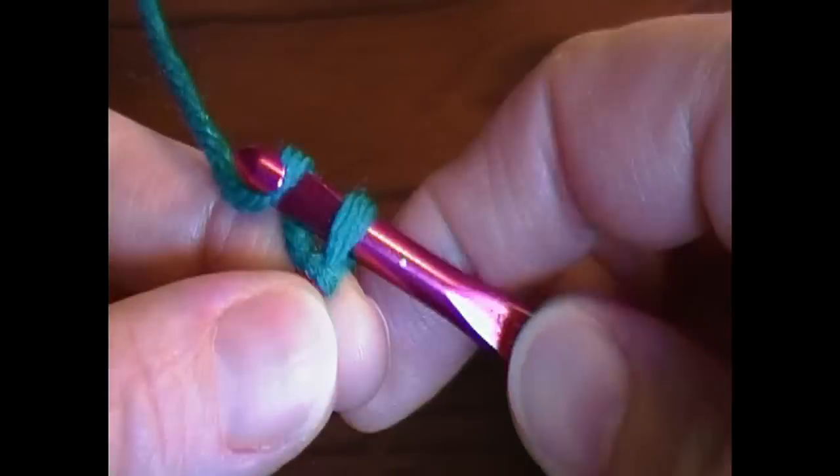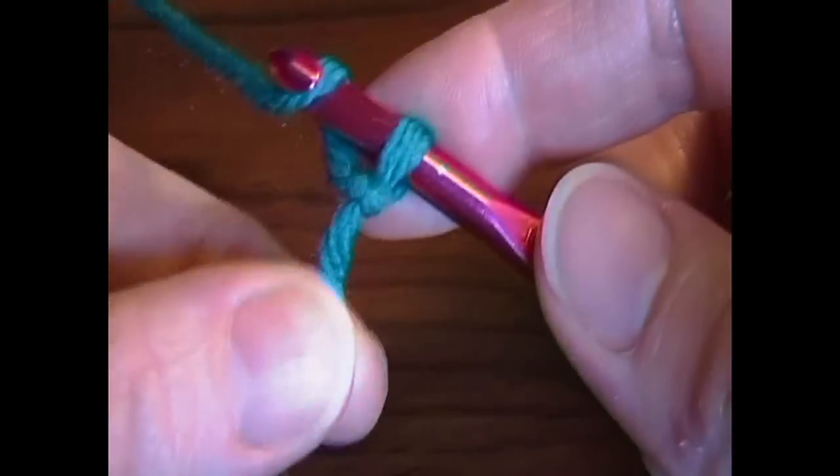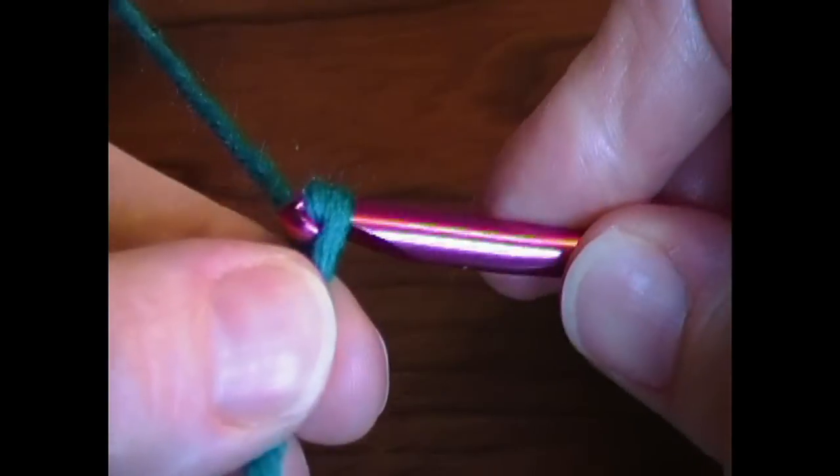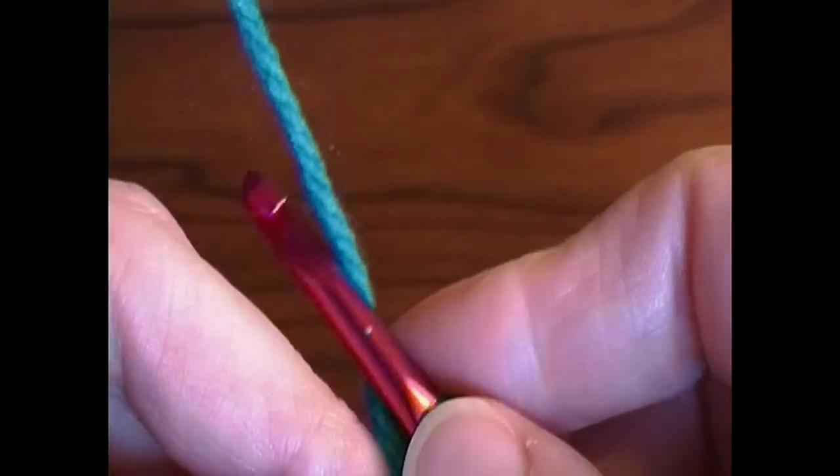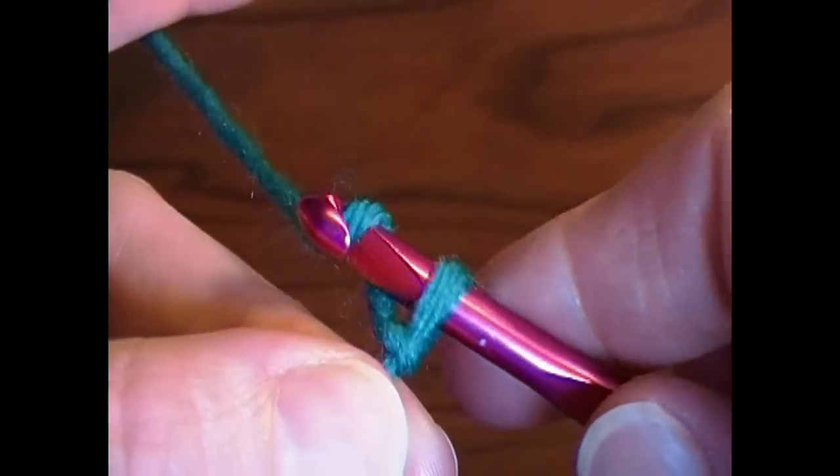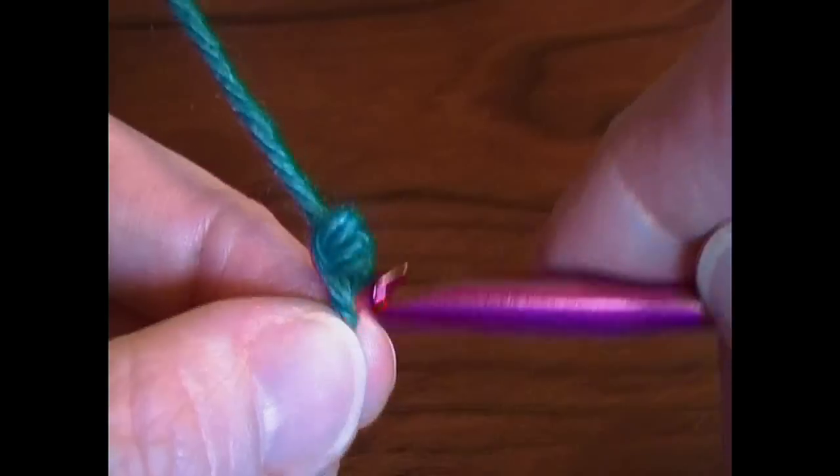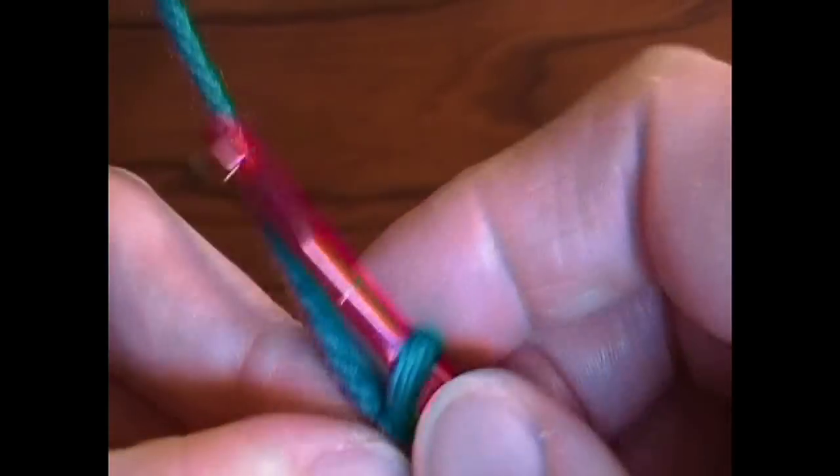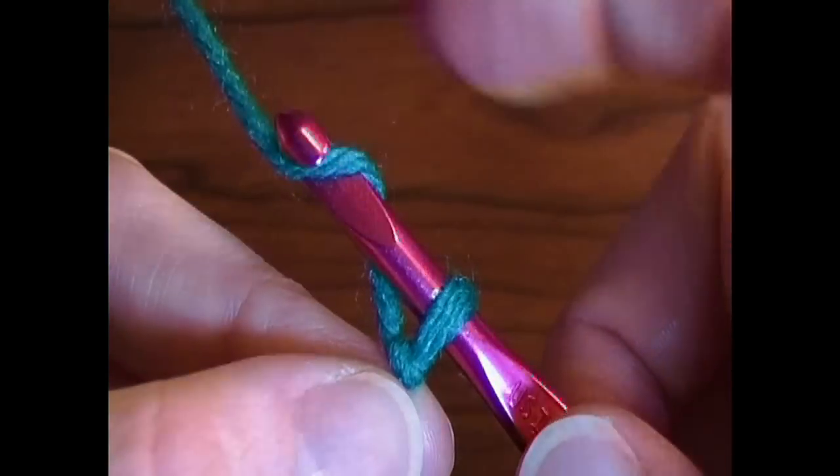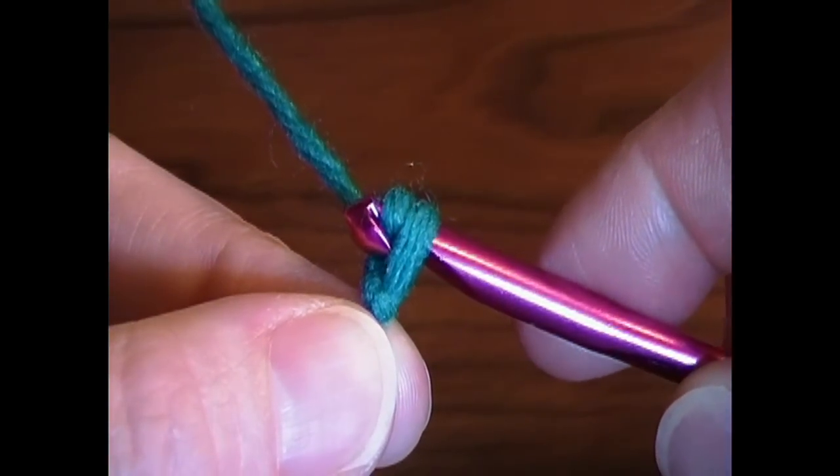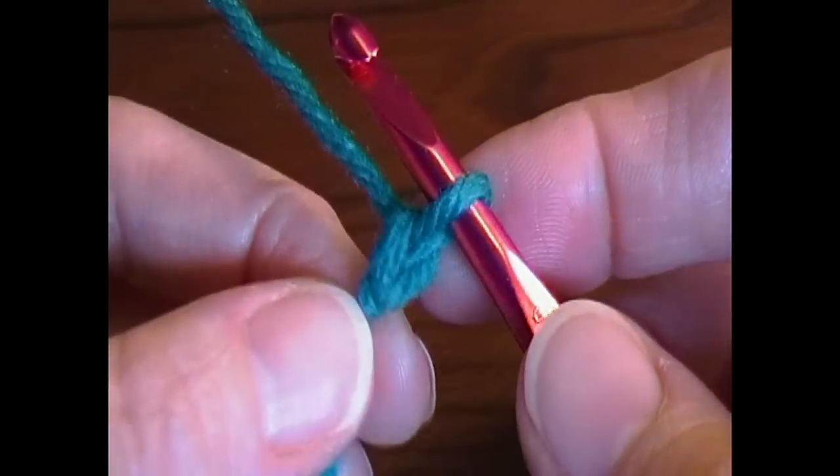So what we are going to do for this granny square—some people use what is called a magic loop—but I am going to do a chain 4. So what you do to chain 4 is you yarn over your hook, which is you kind of scoop the yarn around the hook, and you draw it through that loop. Let me take it out and do it again. Scoop, catch it in the hook, then you pull it through by twisting your hook down slightly. That is your one chain.